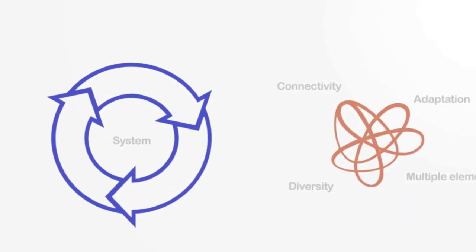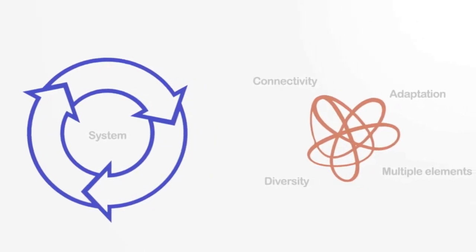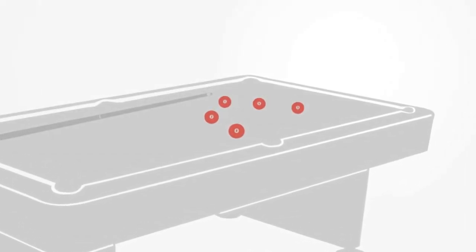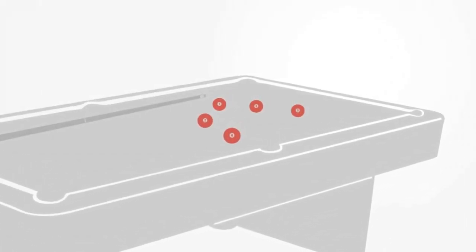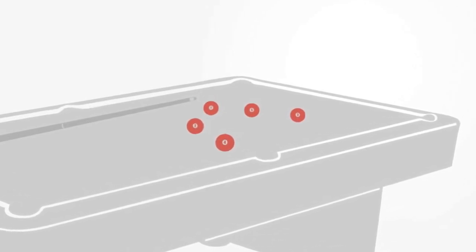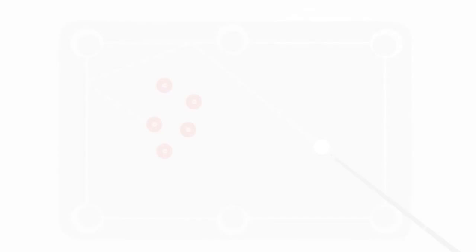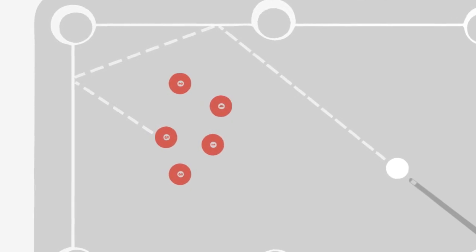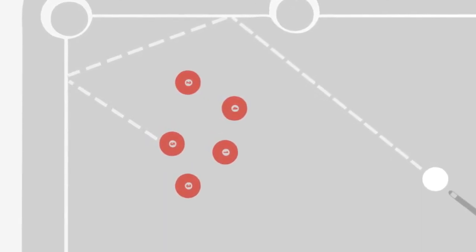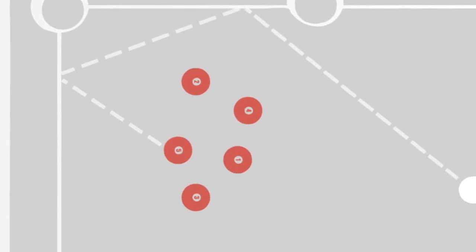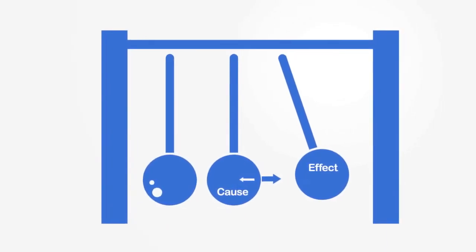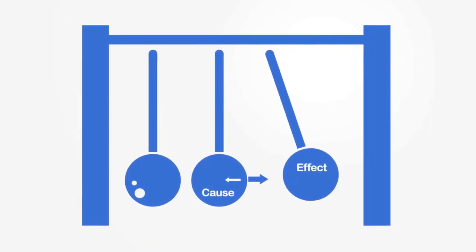So now we have an idea of what systems and complexity are. Let's put them together, starting with a system with a low level of complexity — an example might be a set of five billiard balls on a table. There are quite few of them, they are all the same, they are all separate from each other, and they are incapable of adapting. If we input some energy into this system by pushing one of the balls, the outcome is directly proportional to the input and is predetermined by it. We can repeat the same action a million times and get the exact same results. We call this type of system a deterministic or linear system, because we can draw a direct line between the cause and effect — that is, input and output to the system.